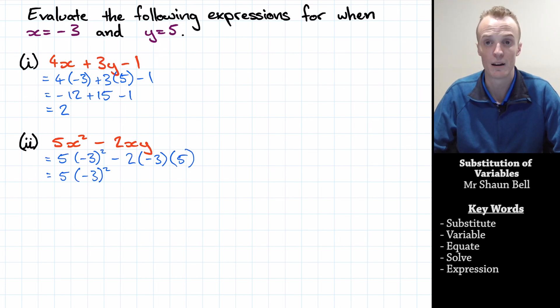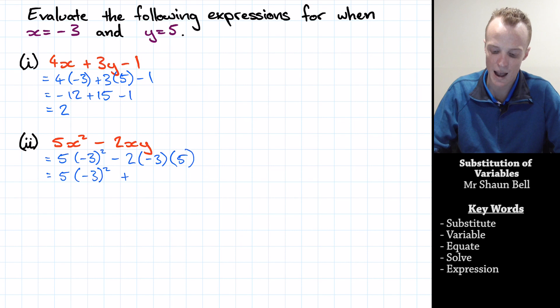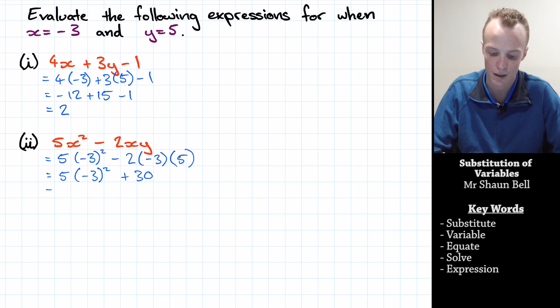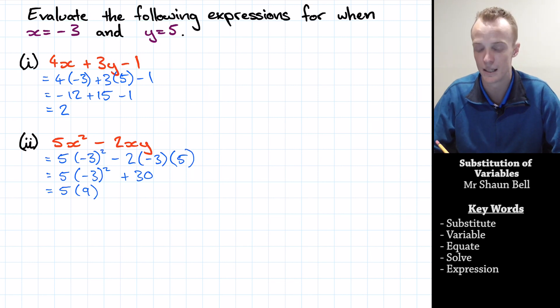Negative 2 times negative 3 is going to be positive 6. Positive 6 times 5 is going to be positive 30. So we're going to add on 30 at the end. Now the next step of BEDMAS is to evaluate any exponents. Now we do have the exponent of negative 3 squared. Now negative 3 squared means negative 3 times negative 3. Negative 3 times negative 3 is going to be a positive number, and it's going to be positive 9.